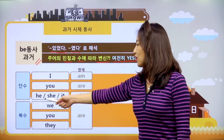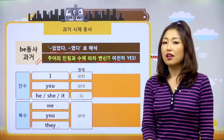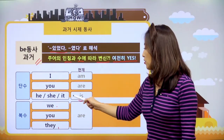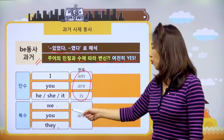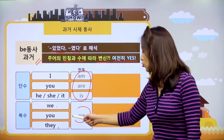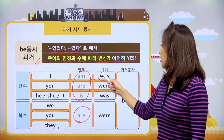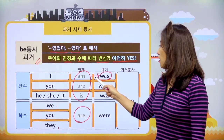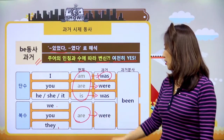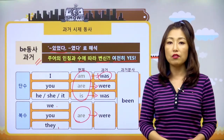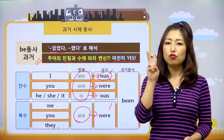단수에 I, you, he, she, it 있었고, 복수에 we, you, they 있었는데, 얘네의 비동사가 이거였잖아요. I는 am, you는 are, he, she, it은 is였고, we, you, they는 모두다 are이었잖아요. 얘를 과거로 어떻게 쓰냐? am의 과거는 was, are의 과거는 were, is도 was, are도 were이렇게 되는데, 비동사의 과거는 딱 두 종류밖에 없네요. was나 아니면 were.